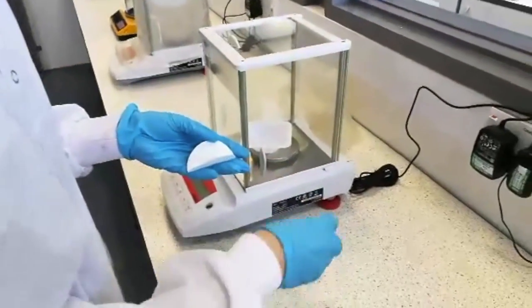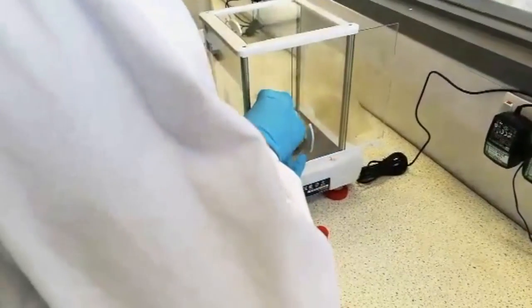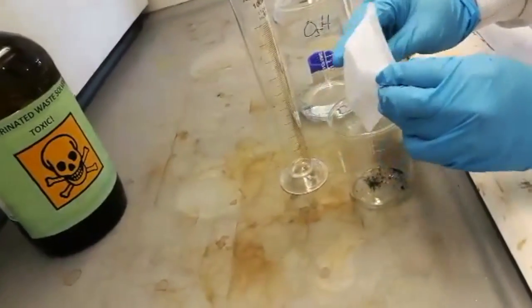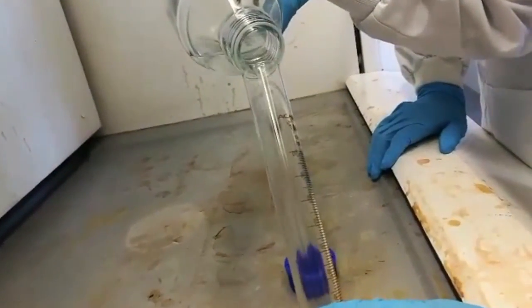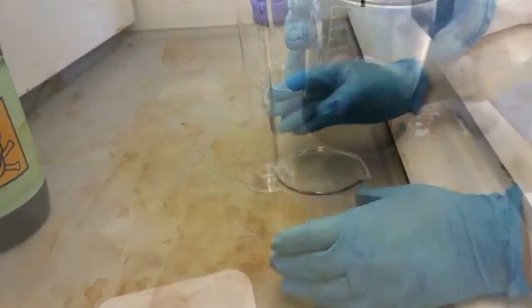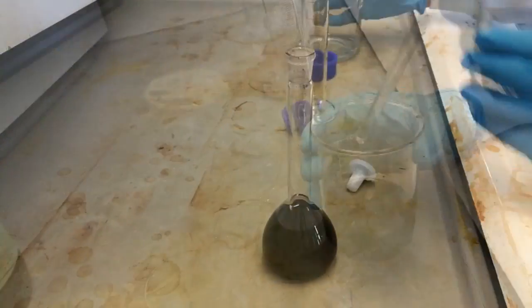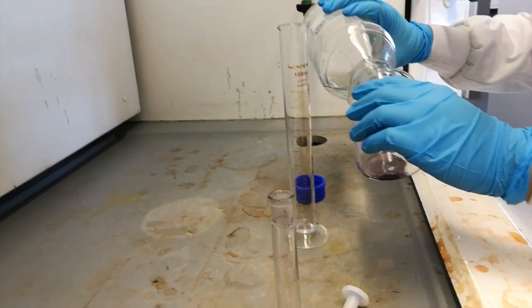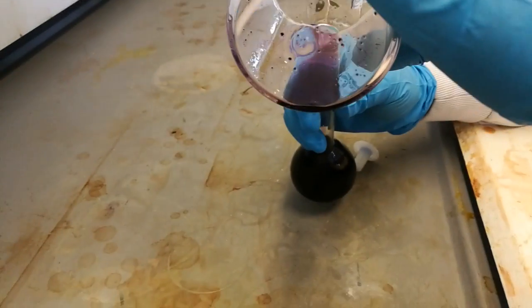We weighed DPPH powder to ensure the solution is saturated. Next, we made up the DPPH stock solution by dissolving the powder in ethanol. This was placed in a volumetric flask and was made up to 100 milliliters.